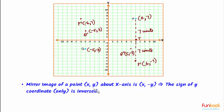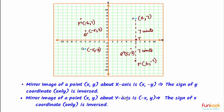Let's summarize what we have learnt. The mirror image of a point (x, y) about the X axis is (x, −y) — only the sign of the Y coordinate is reversed. The mirror image of a point (x, y) about the Y axis is (−x, y) — only the sign of the X coordinate is reversed.